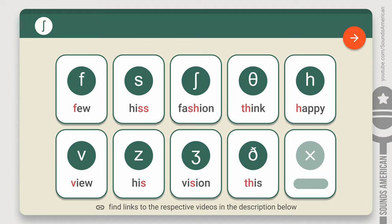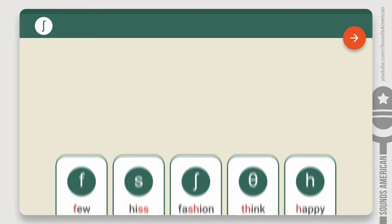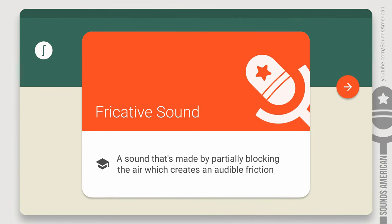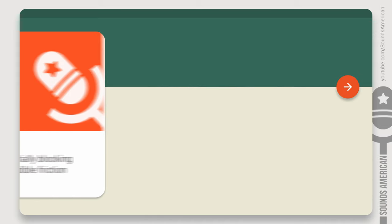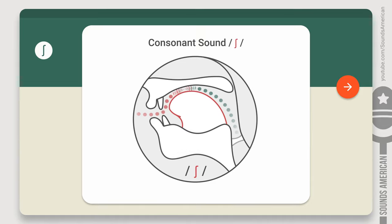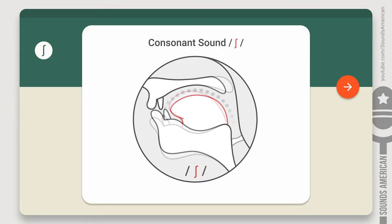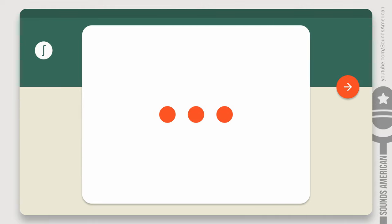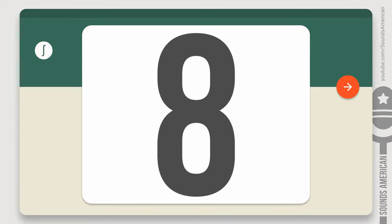So, why are they called the fricative consonants? All these sounds are made by partially blocking the air moving through your mouth, which creates an audible friction. Speaking about the SH consonant, this sound is made by partially blocking the air flowing between the blade of your tongue and the roof of your mouth. The SH occurs in only 40% of the world's languages, but in English it's found in about 8% of words.